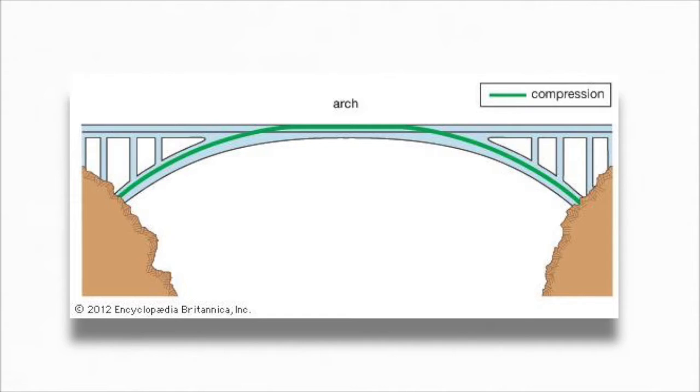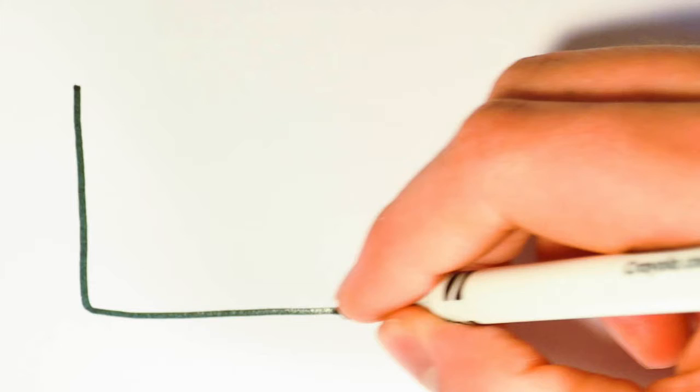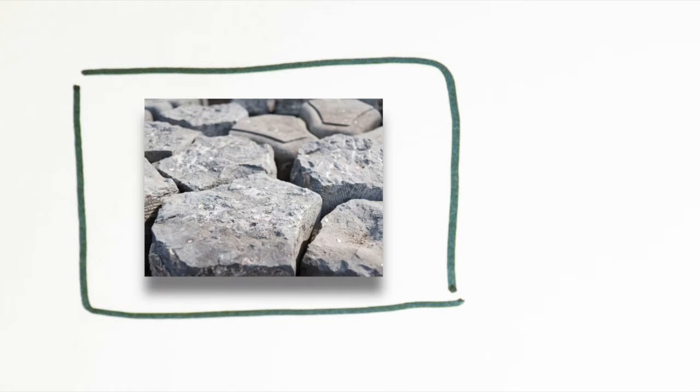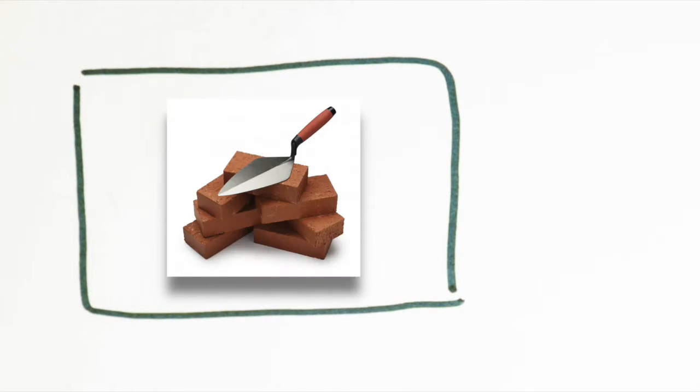Arch bridges rely primarily on compression because as forces are carried outwards along the curve of the arch, the molecules of the material are compressed. When selecting a building material for an arch bridge, engineers must consider only materials that are strong under compression. These materials include stone, concrete, or steel.